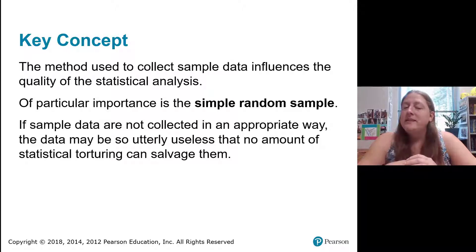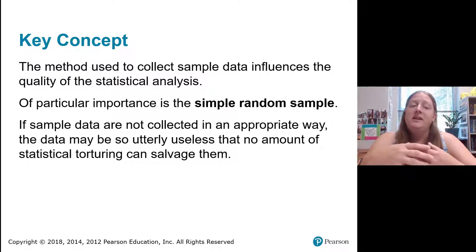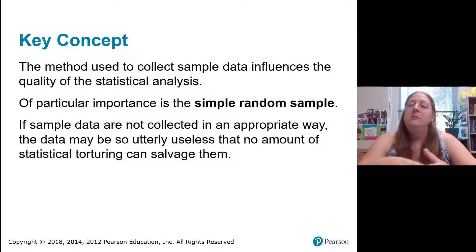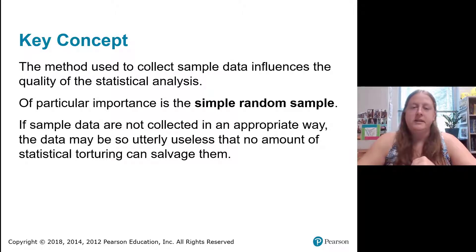Simple random sampling is an incredibly important method that we'll be coming back to. It's important to know that if we don't collect data well — if we don't do it in an appropriate way to begin with — there's no saving it. There's no coming back from that. So the method used to collect sample data is incredibly important, even though it comes so early in a statistical study.